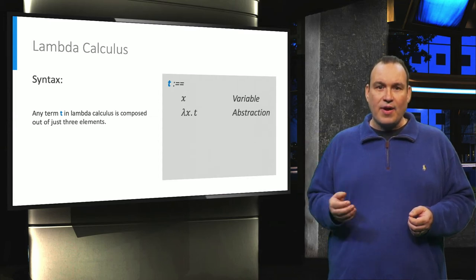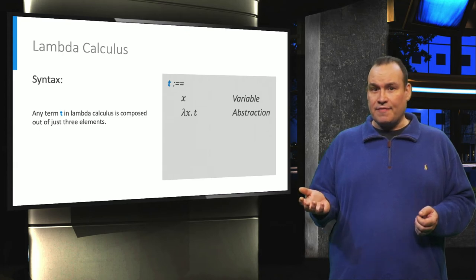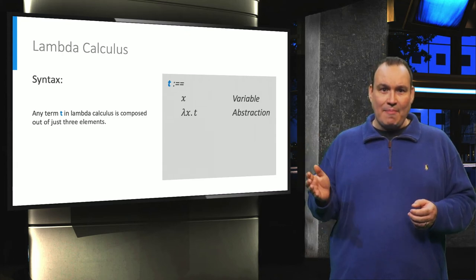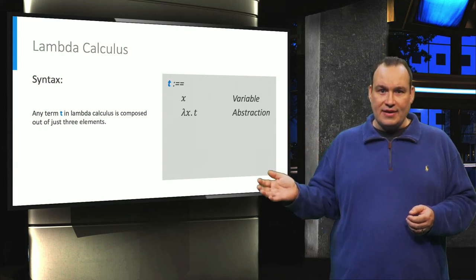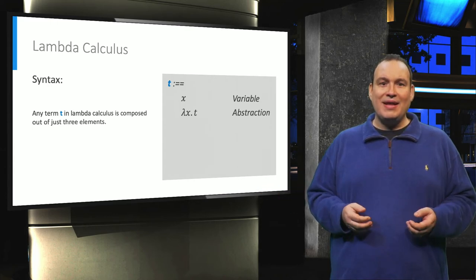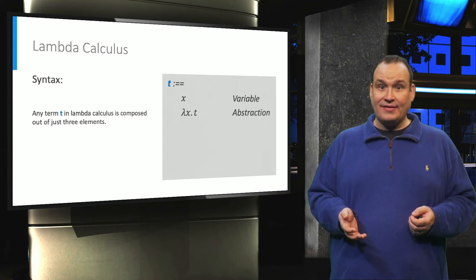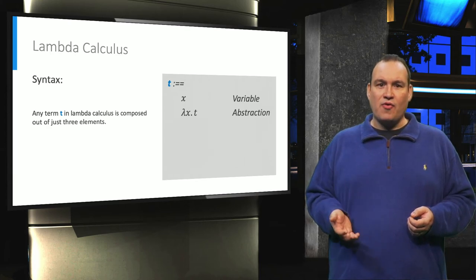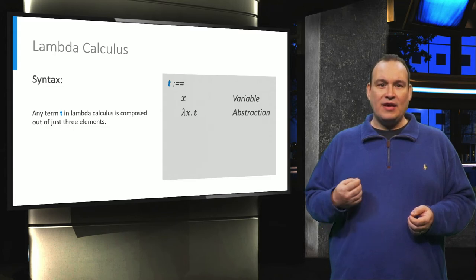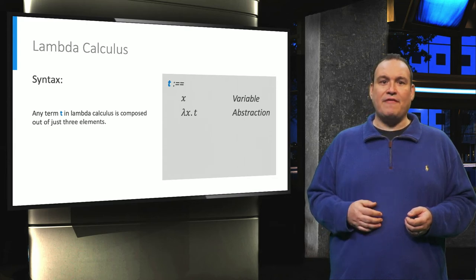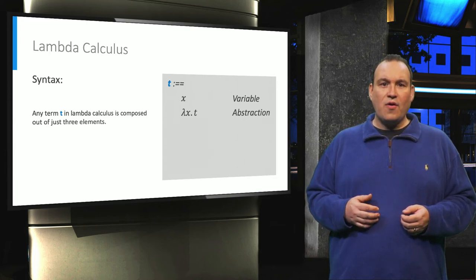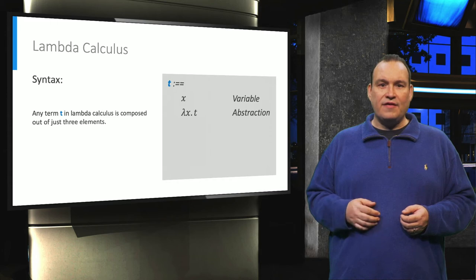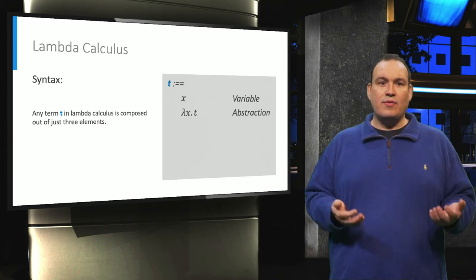Next is the abstraction. Now you see where the name is coming from. We write Lambda X dot T and by that we actually mean an unnamed function of X with the term T. In regular math or programming, you would possibly write f of X equals T. Just that here we don't have to give the function a name like f. Also note that we have T in this definition, which means that it is recursive.